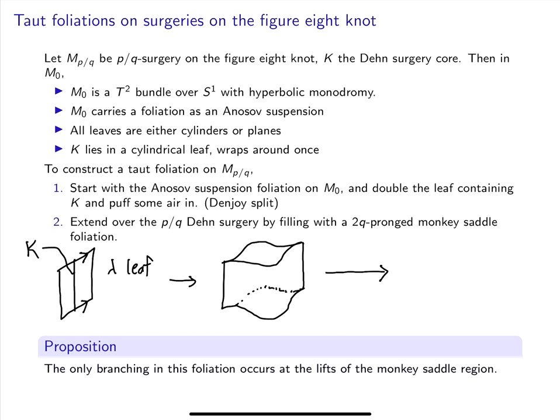Now to be precise, I'm not only puffing in air into a compact region, I'm puffing in air all the way along the leaf λ. Since λ is cylindrical, this is okay. This operation is called a Denjoy split. Finally, let's do P/Q surgery on this manifold M₀. So let me draw in blue the new meridian. The meridian intersects the cusps four times. So in the surgered manifold, this blue curve bounds an ideal quadrilateral. Now the exterior of this region is foliated by the Anosov foliation, and the interior can be foliated using a stack of monkey saddles.